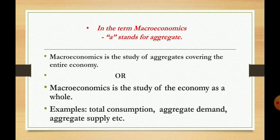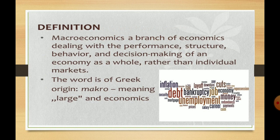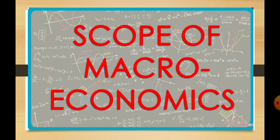Examples of macroeconomics: total consumption means the consumption of the household sector for all types of goods and services; aggregate demand is the demand of all four sectors of the economy for all types of goods and services; aggregate supply is related to the supply of all types of goods and services by the production sector. Definition: macroeconomics is a branch of economics dealing with the performance, structure, behavior, and decision-making of an economy as a whole rather than individual markets. The word is of Greek origin — 'macro' is derived from the Greek word 'makros,' which means large.